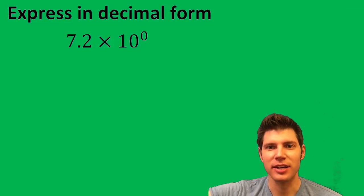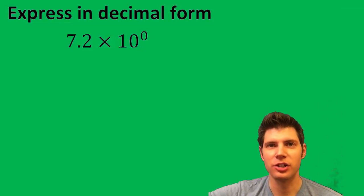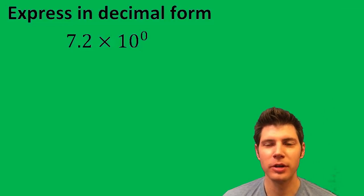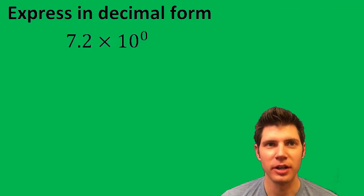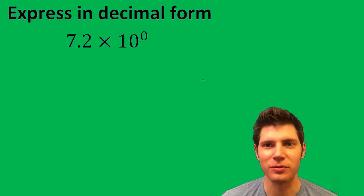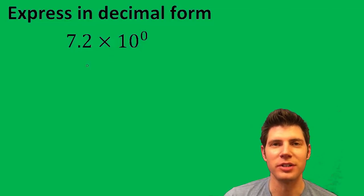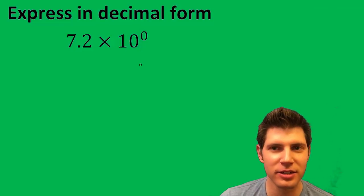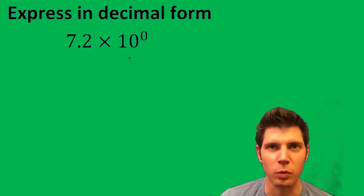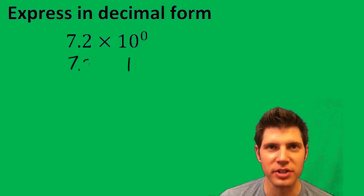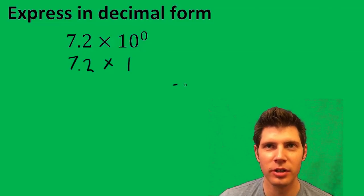Hey guys, welcome to this scientific notation problem. We're going to express this in decimal form — it's currently in scientific notation form. This one: 10 to the 0. Anything to the 0 is just 1. So basically we're doing 7.2 times 1, which gives us 7.2.